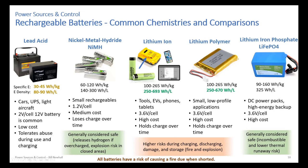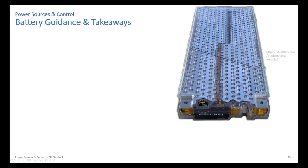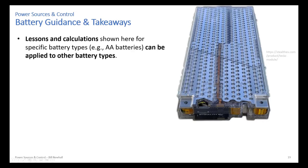All batteries have a risk of causing a fire when shorted — even a double-A battery can light up steel wool, and a nine-volt battery will do the same. Thin conductors can glow and cause a fire when shorted. This becomes especially important when you put batteries into high-energy battery packs, like a Tesla battery.